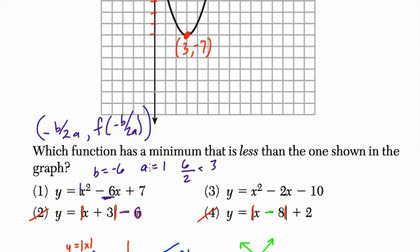That means essentially, it's a fancy way of saying, plug three into your equation. So y equals three squared, nine, minus 18 plus seven. That's negative nine plus seven, which is negative two. And that is not less than negative seven. So the answer has to be three.